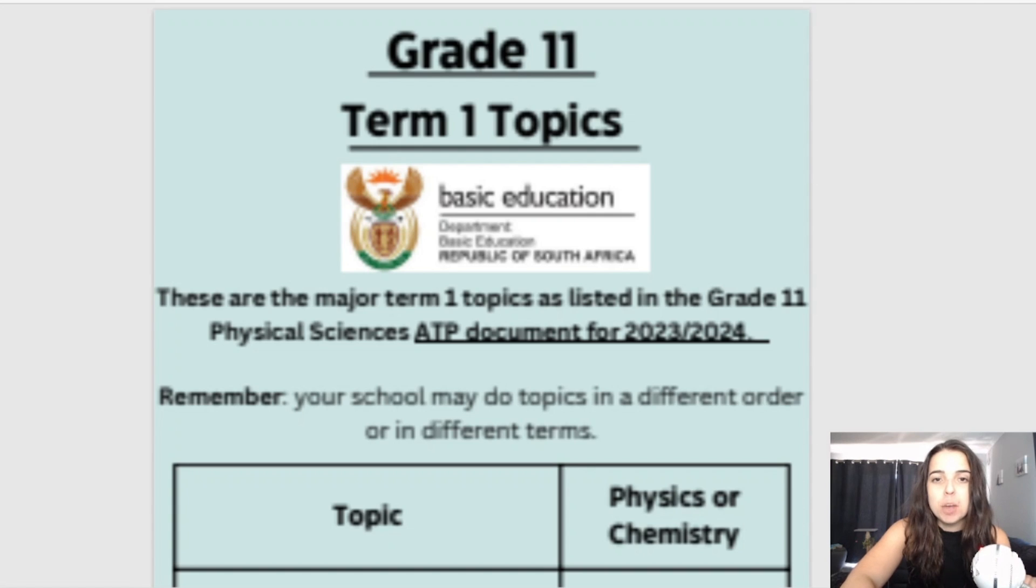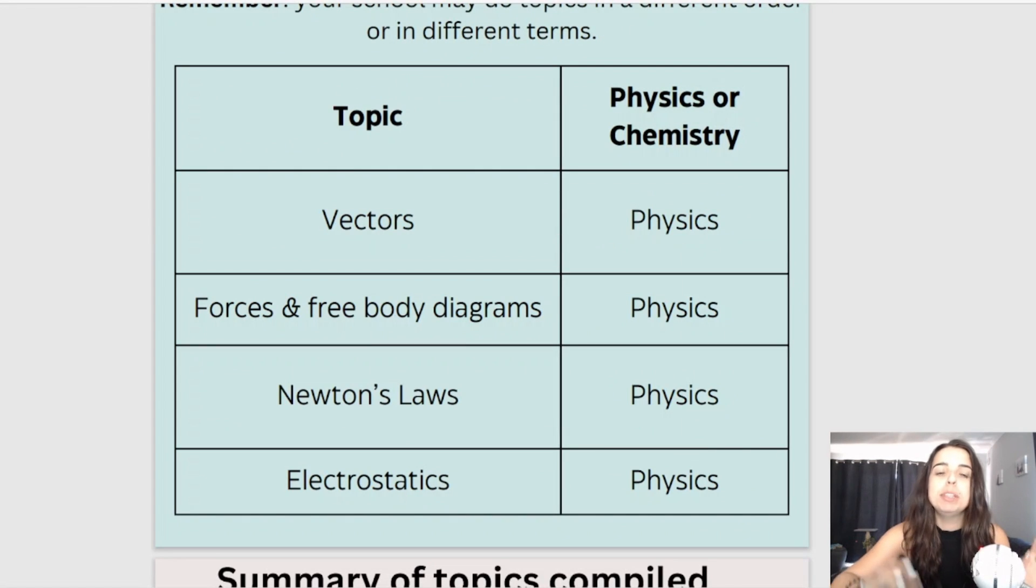Now remember your school can switch up the order but according to the ATPs, you'll be doing the following topics in term one for physical sciences and that is vectors, which is physics, forces and free body diagrams, Newton's laws and then electrostatics.